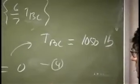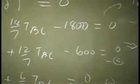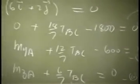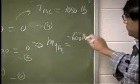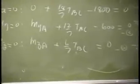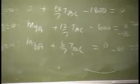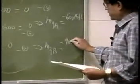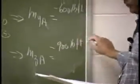Then from this equation you solve for M_YA, that comes out to be negative 600 pound-feet. From this equation you solve for M_CA, that comes out to be negative 900 pound-feet.